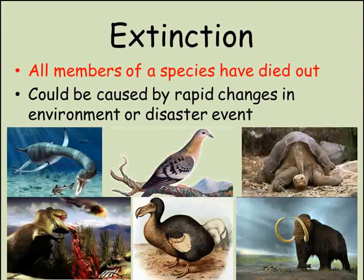In contrast, if every member of a species dies before it is able to reproduce, then that species becomes extinct. No members of the species remain, and from that point the species is not able to return. This could happen if the environment changes too quickly for the species to evolve, or if a disease or other event wipes out the entire population very rapidly.